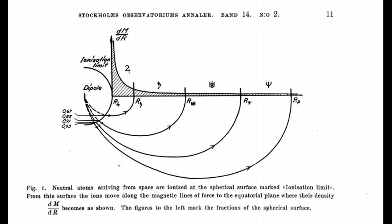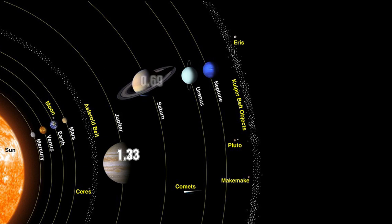Alfvén goes on to calculate the density distribution based on the magnetic field lines, and he finds that this model matches closely with the observed density of the outer planets. This is not merely a diagram — there are extensive equations and calculations behind it, detailed in three papers linked in the description. When he finishes those calculations, the model matches closely with the observed densities of the outer planets.